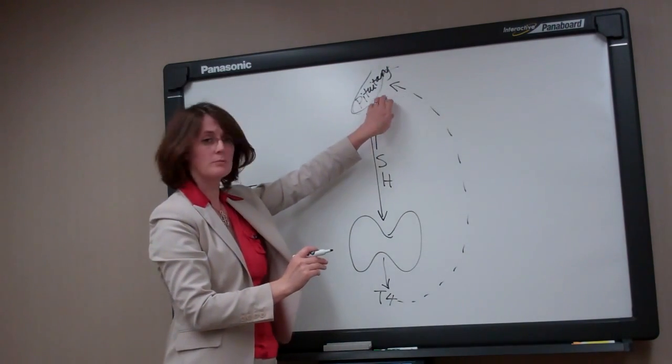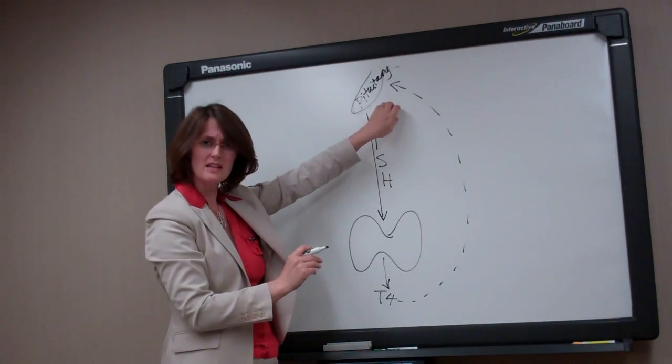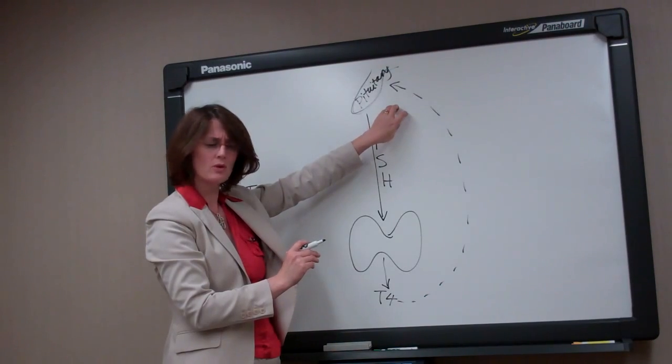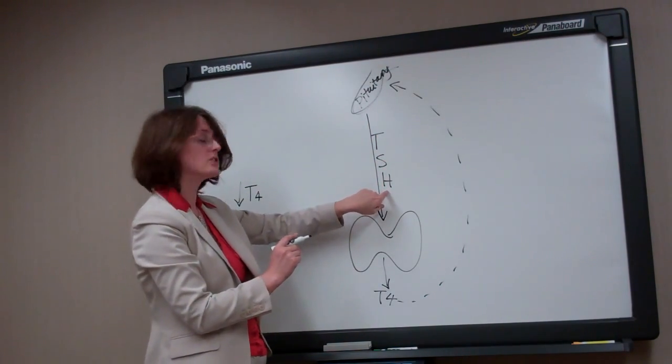Because we have a low T4 level, the pituitary gland recognizes that and says, hey, thyroid, wake up, make more hormone, and increases the amount of stimulation it's giving.